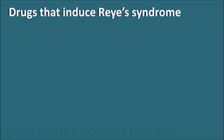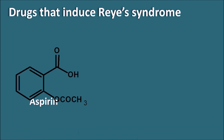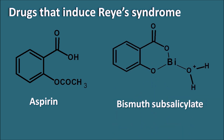The drugs that induce Reye's Syndrome include aspirin, which is acetylsalicylic acid. Because of its salicylic acid moiety, it can induce Reye's Syndrome in patients suffering from viral infections. Another drug is bismuth subsalicylate, which also contains a salicylic acid moiety attached to bismuth and carries a risk for inducing Reye's Syndrome.